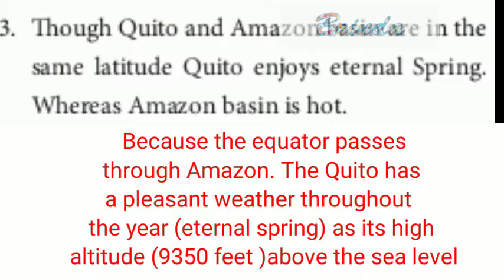Third question: though Quito and the Amazon basin are in the same latitude, Quito enjoys eternal spring whereas the Amazon basin is hot. This is because the equator passes through the Amazon, making it hot and humid. But Quito enjoys pleasant weather throughout the year — eternal spring — as it is at a high altitude of 9,350 feet above sea level, which causes cooling.